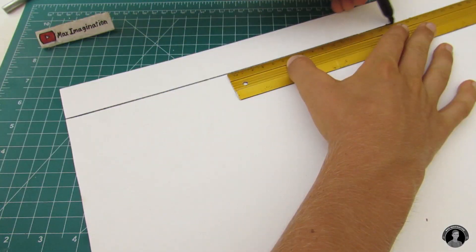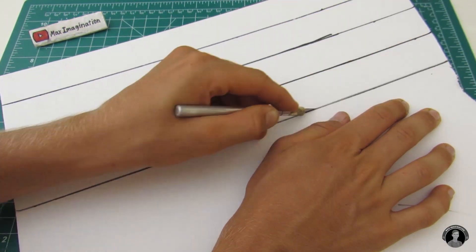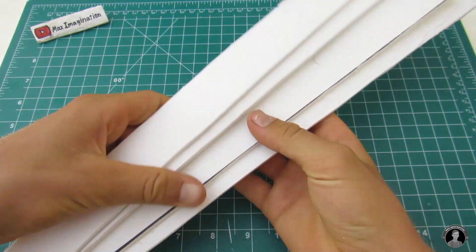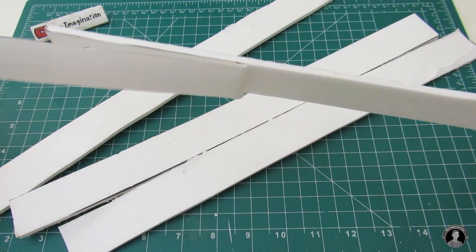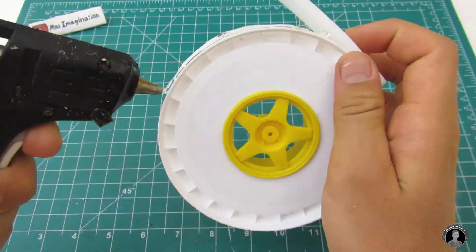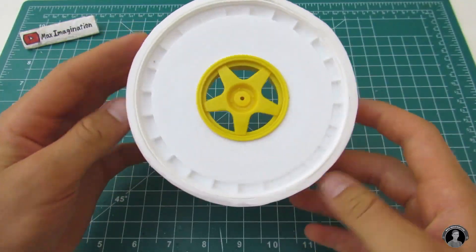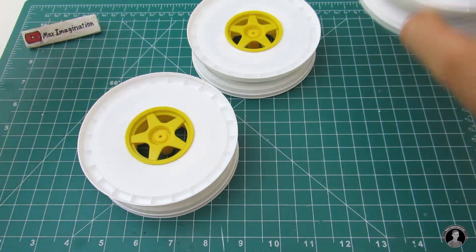Then taking a measurement of each of the new rims, cut some strips of foam that will wrap around. Once you've glued this strip of foam onto the rims of the first wheel, it should look sort of like this. Then do the same for the other three wheels.